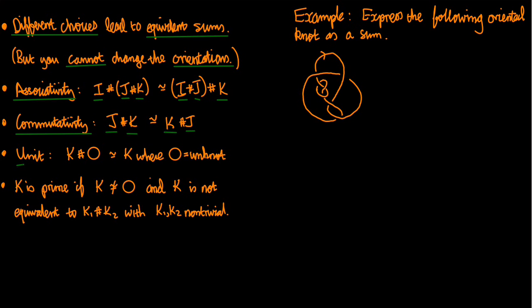Next, perhaps more interesting, there is a unit. If I take the sum of K and the unknot then the result is equivalent to K again. In other words, the unknot is like an identity element for the knot sum. And I won't draw the example, but you should have a go at taking the sum of your favorite knot K with the unknot and see what you get. Check that you get K back again.